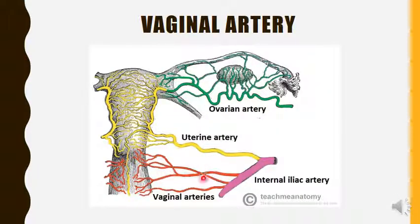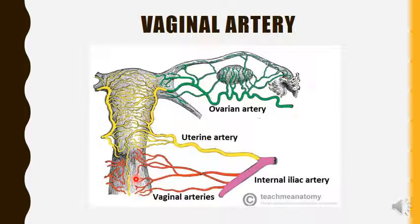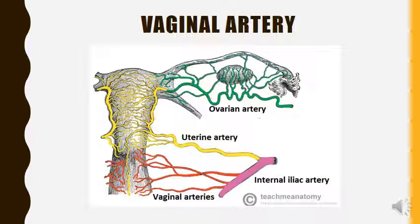The vaginal artery corresponds with the inferior vesicle artery of the male. It passes downwards and medially towards the vagina and divides into several small branches that anastomose in the midline in front and behind the vagina, forming anterior and posterior azygous arteries of the vagina. It supplies the vagina, bulb of the vestibule, urinary bladder, and rectum.